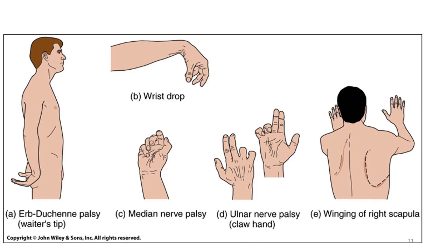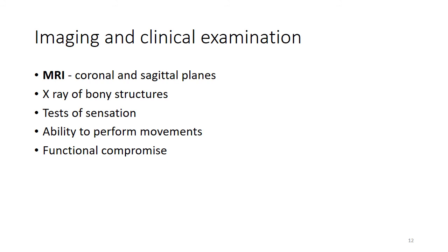Imaging of the brachial plexus itself can be achieved by MRI scans, particularly in the coronal and sagittal planes, but that discussion is something for your clinical tutors. Clinical testing for sensation and the patient's ability to perform movements, then comparing it to their normal side, is a method to assess and then to monitor the degree of functional compromise. Most importantly, imaging of damage to surrounding bony structures is necessary to clarify whether fractures or bony pathology might be the cause of any nerve damage. This concludes our discussion of the innervation of the upper limb and the brachial plexus, and I thank you for your attention.